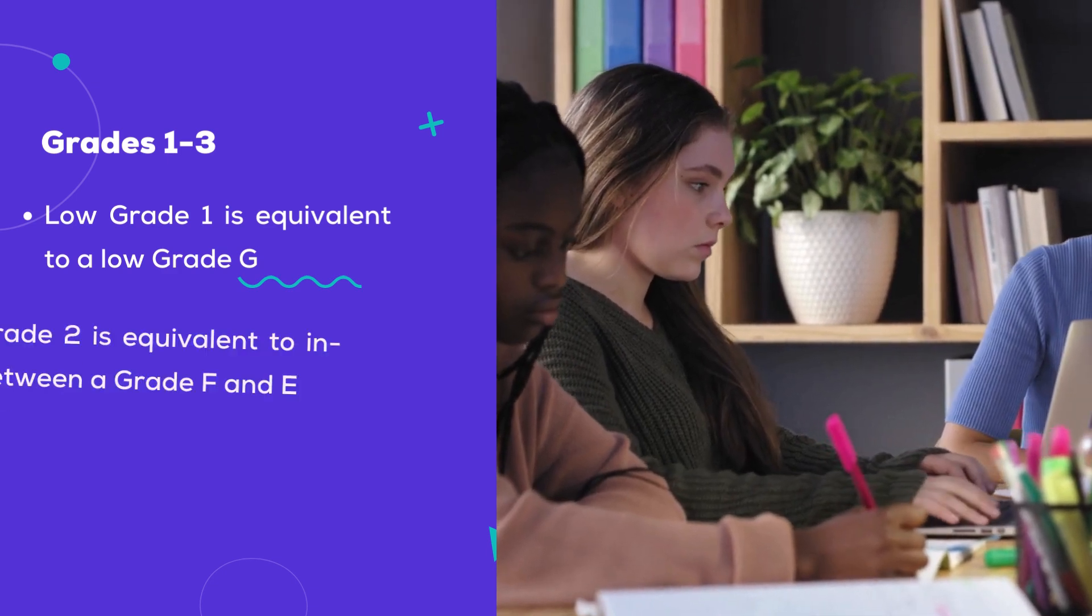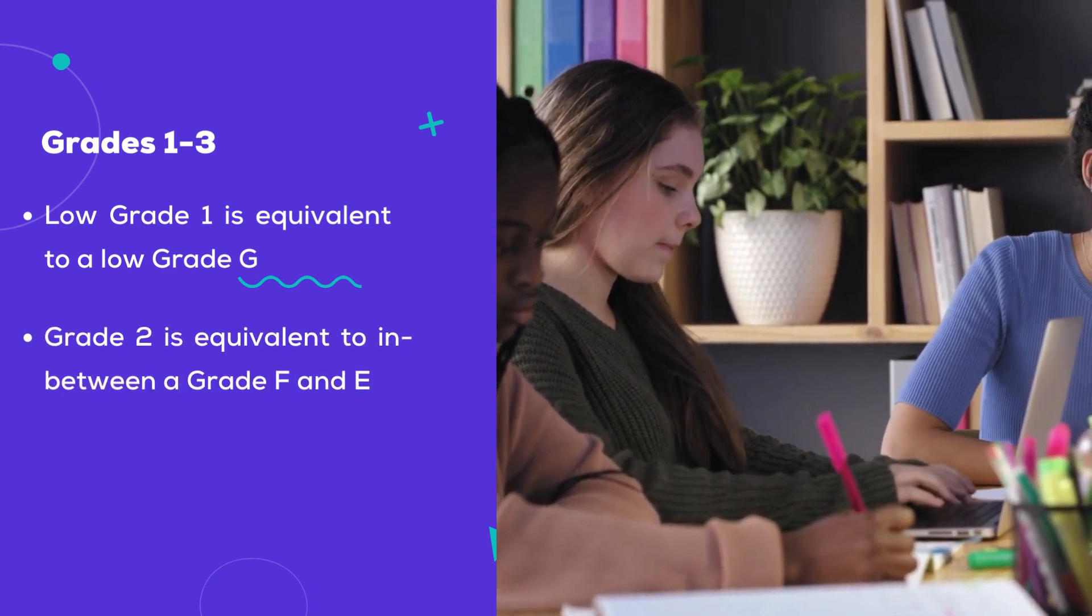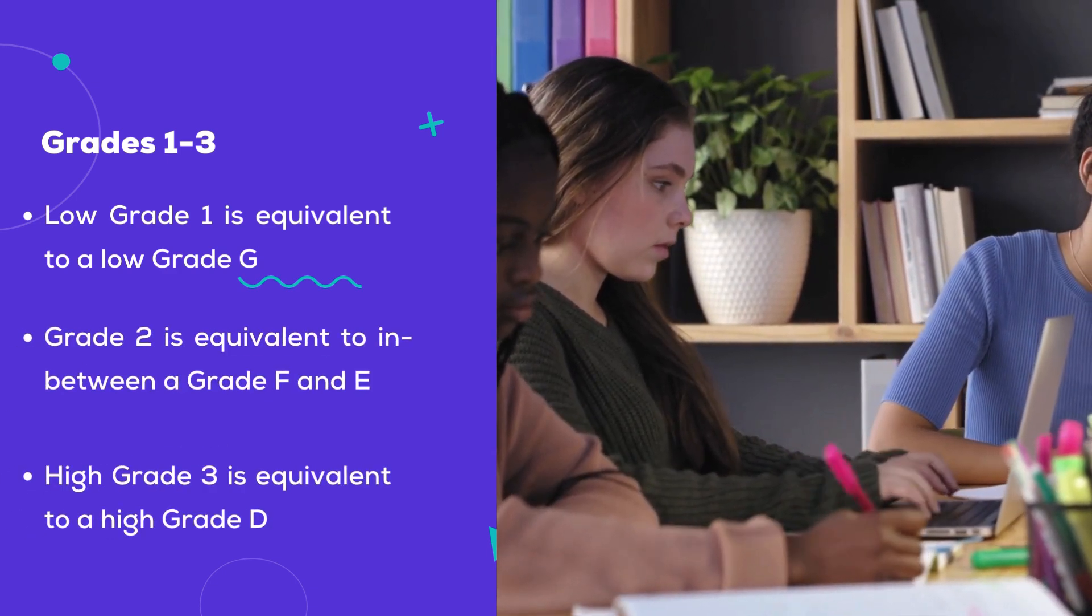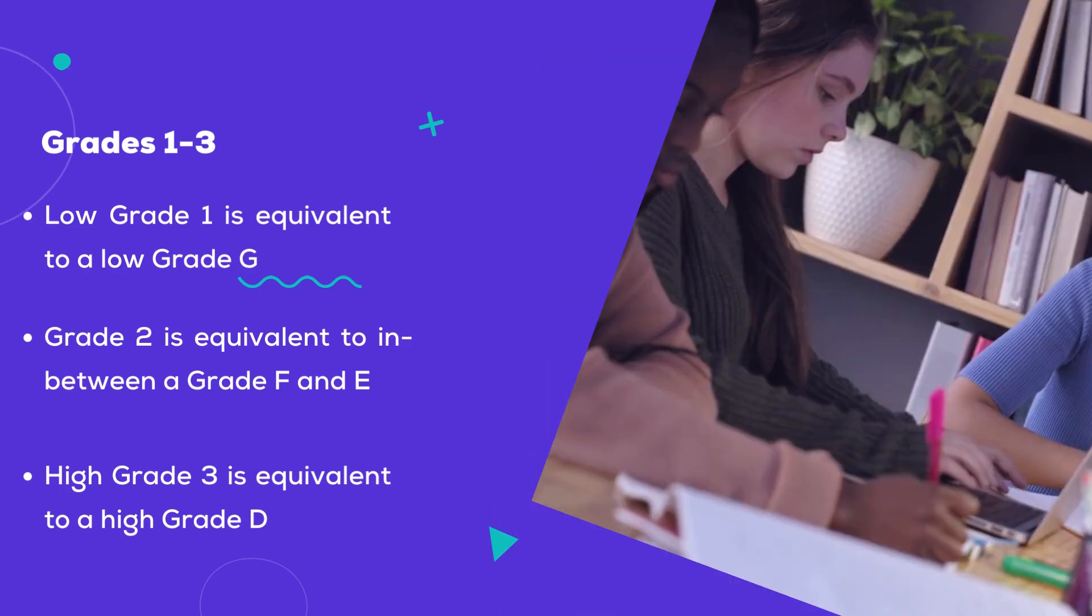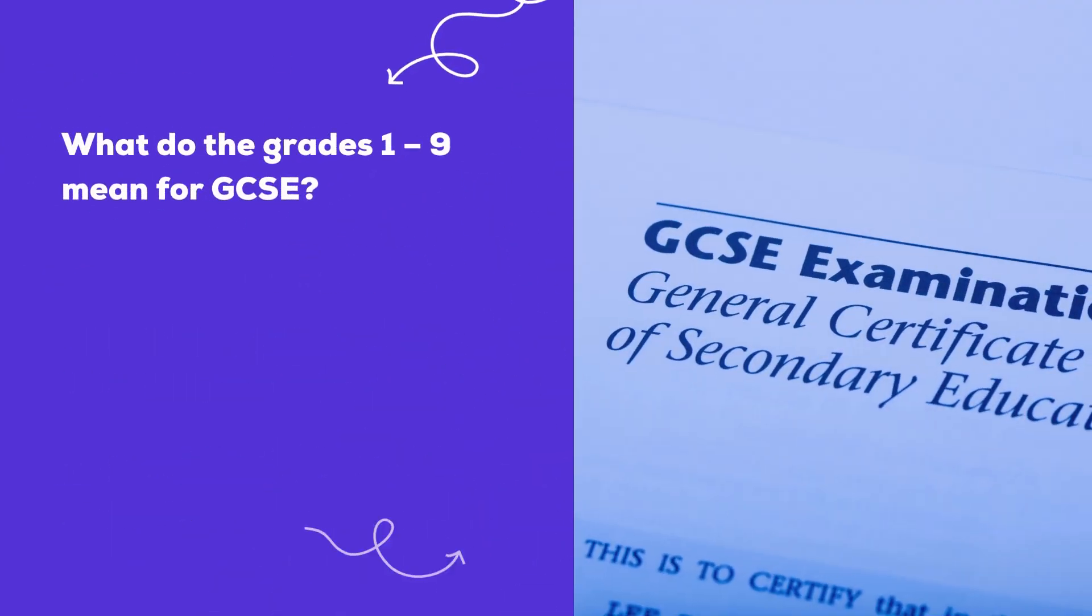Grades 1 to 3: Low grade 1 is equivalent to a low grade G. Grade 2 is equivalent to between a grade F and E. High grade 3 is equivalent to a high grade D.